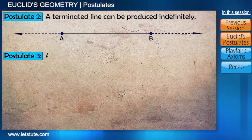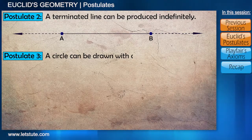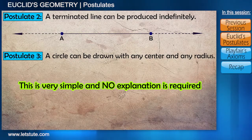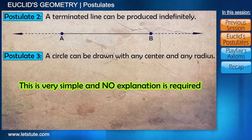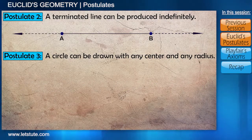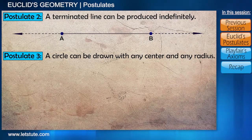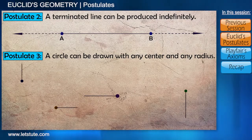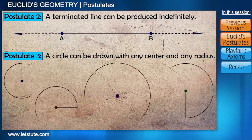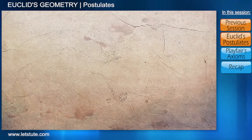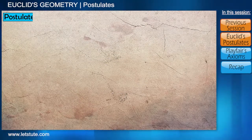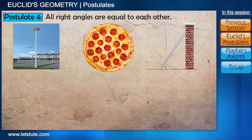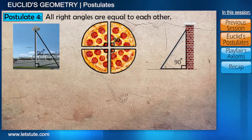Postulate 3 states that a circle can be drawn with any center and any radius. I know many of you will not need any explanation for this very self-explanatory statement, but one example will help you understand it better. If you have any point, we can take any random point and with any random radius, we can draw a circle. Postulate 4 states that all the right angles are equal to each other. All right angles measure 90 degrees and hence all of them are equal.